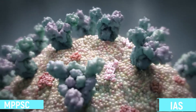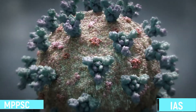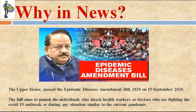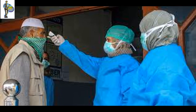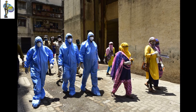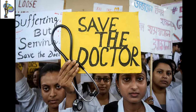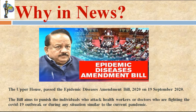Today's topic is the Epidemic Disease Amendment Bill 2020. The upper house, Rajya Sabha, passed this bill on 19th September 2020. The monsoon session of Parliament is running very short, with no question hour, zero hour, or private member bills. This session was brought to comply with essential legislative works and to convert certain essential ordinances into acts.